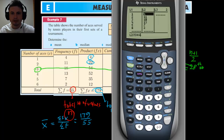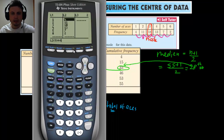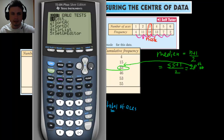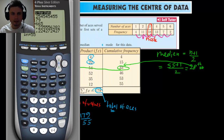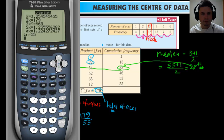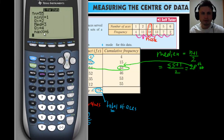Go into STAT — I already entered the data. On the left side (L1) enter the number of aces: 1, 2, 3, 4, 5, 6. On the right side (L2), enter the frequencies. Then go into STAT again, click CALC, one-variable stats. Change the list to L1 and the frequency list to L2 by pressing second-2, then click calculate. The results: mean (x̄) = 3.25, n = 55, minimum x = 1, median = 3, and maximum x = 6. So to find the range: 6 − 1 = 5.